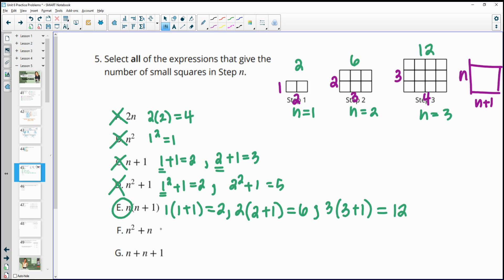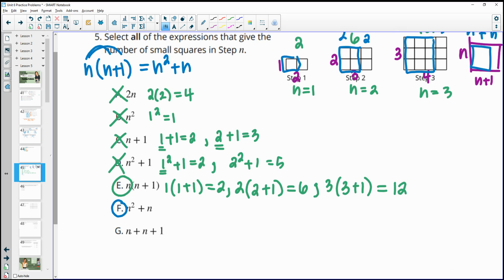Then in F, we have n squared plus n. One way you can do this is if n times n plus 1 is good, you could think of distributing this n in. So another way to write this would be n squared plus n. So we would know this one is going to be true because those are equivalent expressions. Another way you can try and make sense of this is by looking for a square of the step number and then the step number. A square of the step number, so 2 by 2, and then 2 more. So we have that 2 squared and then 2 more. And here we have a 3 by 3 square and 3 more. So then we would have an n by n square and then n more in the nth step. Then G says n plus n plus 1. In step 1, that would be 1 plus 1 plus 1, which is 3, and that fails immediately in step 1.